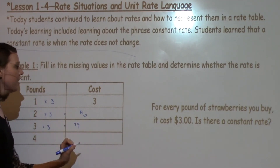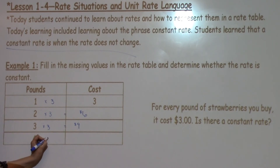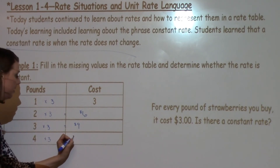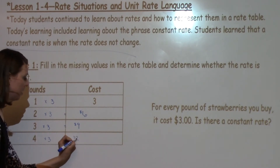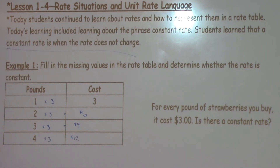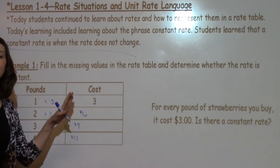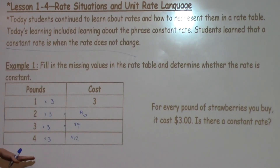And for the last value of the table, I have 4 times $3, which gives me $12. So in this problem, is there a constant rate? Yes. Using this information, we can figure out what that constant rate would be for each pound that we're going to buy.